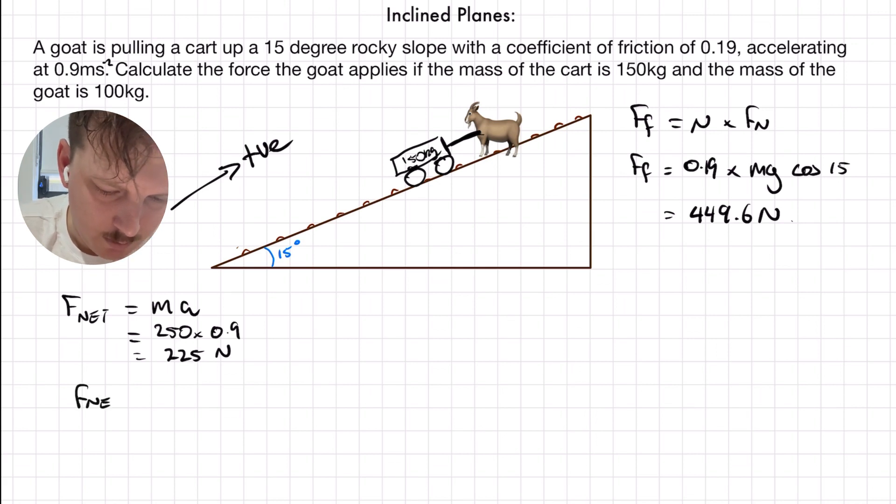That net force is equal to negative parallel force, because that's down the slope. Take the force due to friction, because that's also going to oppose the motion of the goat. Plus the applied force of the goat. So, I'm going to substitute in as much as I can. Positive 225 equals negative 250 times 9.8 times sine of 15, minus 0.19 times 449.6 plus the force due to the goat.